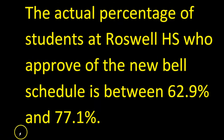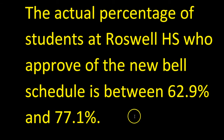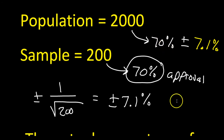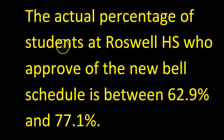So in other words, the actual percentage of students at Roswell High School who approve of the new bell schedule is between 62.9% and 77.1%. That's what margin of error means. Our sample of 200 kids came up with 70%. The true population of all 2,000 kids — we don't know that it will be exactly 70%, but we can be very sure that it's somewhere between 70% plus or minus the margin of error — between 62.9% and 77.1%.